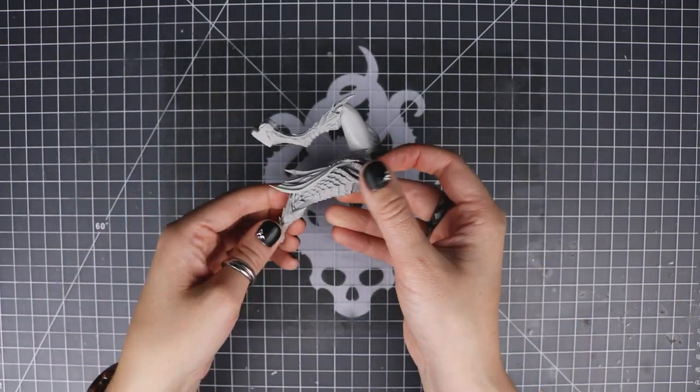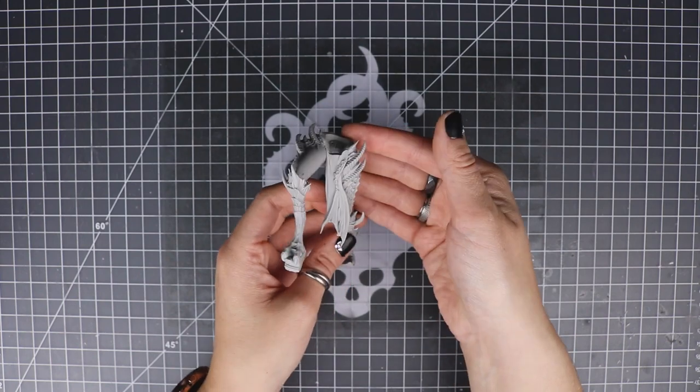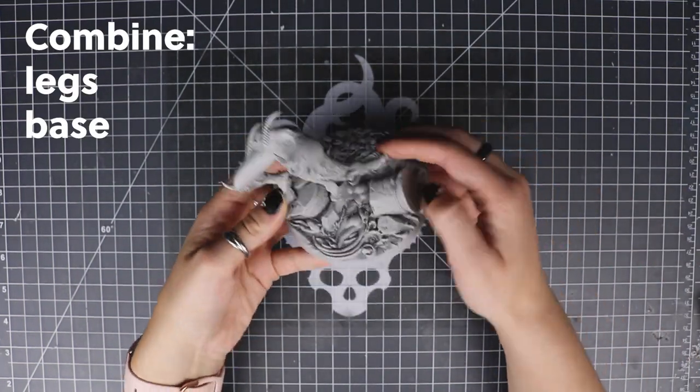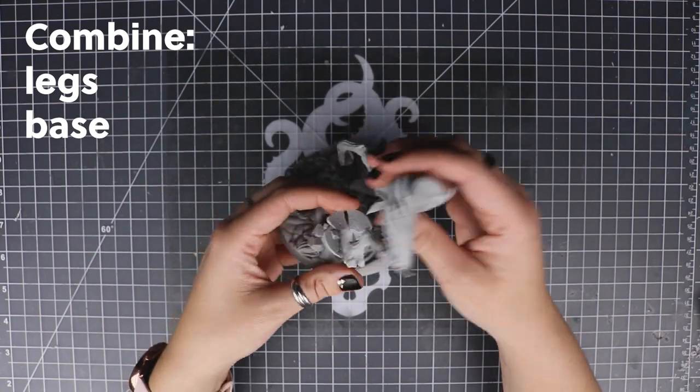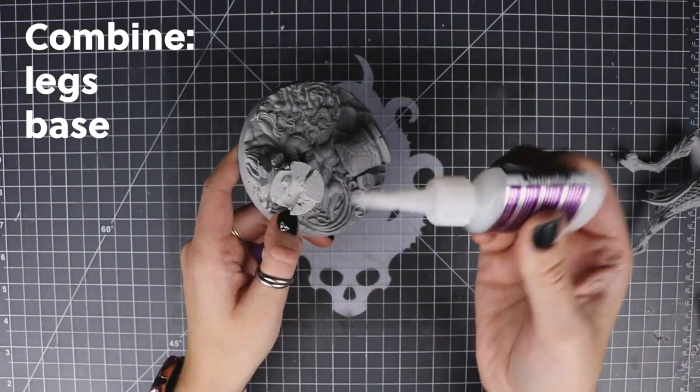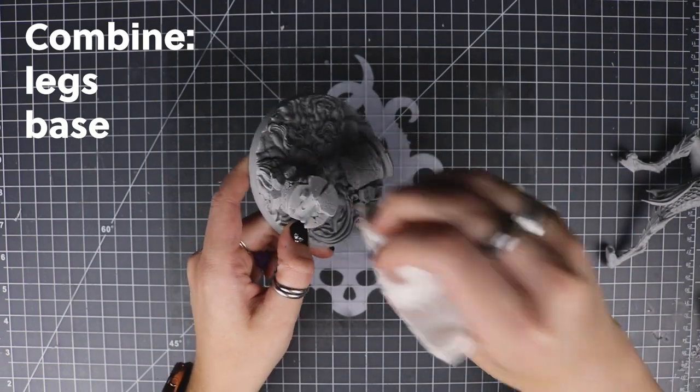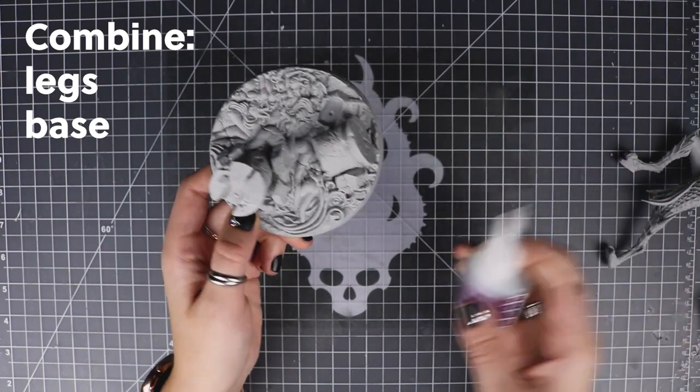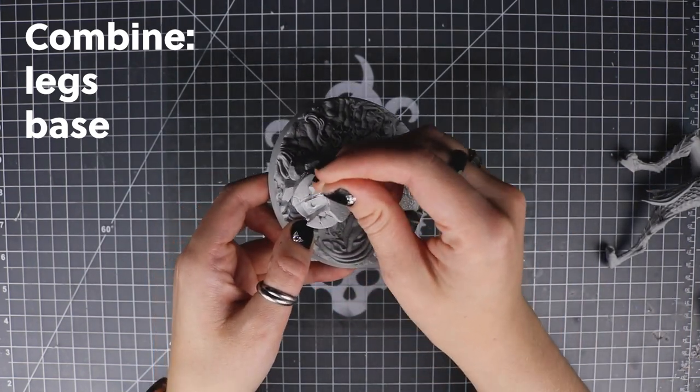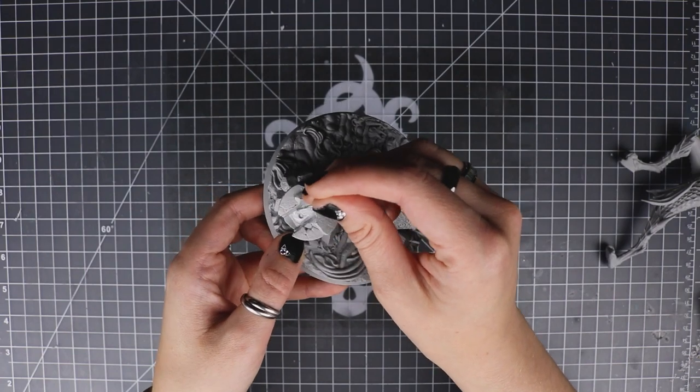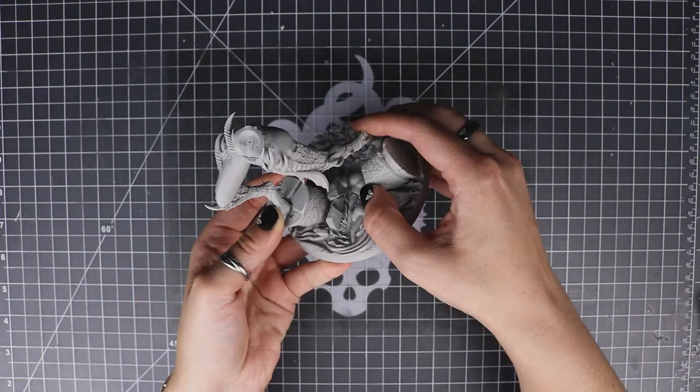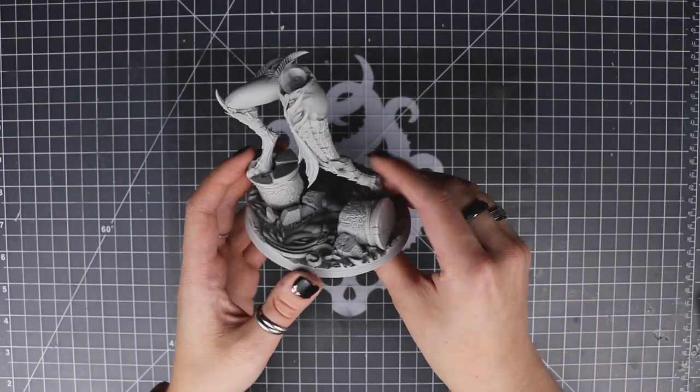Now we've got her lower half all done. It should look like that. Now we're going to put that into the base. Make sure that everything is dry before you do this though. It's important that your glue is distributed evenly there so that it doesn't take forever to dry. Remove any excess and spread it around. You want a nice solid base. Make sure you hold it in place until it's sturdy.